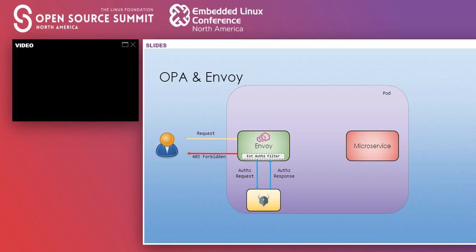OPA uses this information to make an informed decision and sends it back to Envoy for further processing. If OPA denies the request, Envoy sends a 403 back to your client. If OPA allows the request, Envoy sends it to your microservice application, gets the response, and forwards it to your client. You can also use this on egress — if your application tries to reach an external endpoint, you can redirect that traffic through Envoy and have it check whether that egress request is allowed. You can use this exact same flow for both ingress and egress.